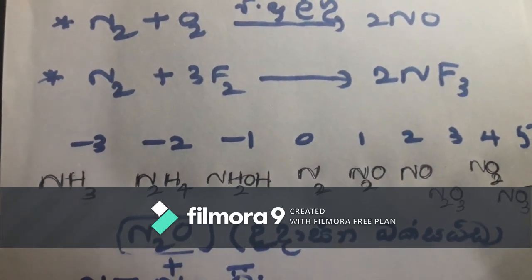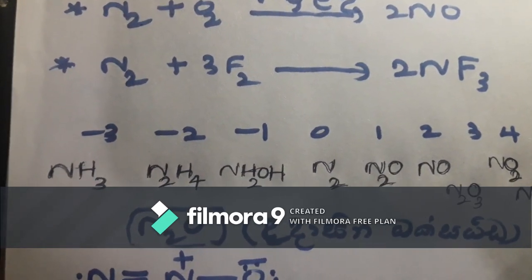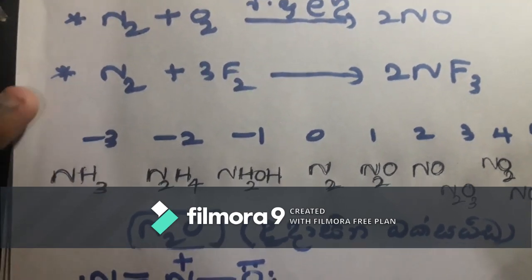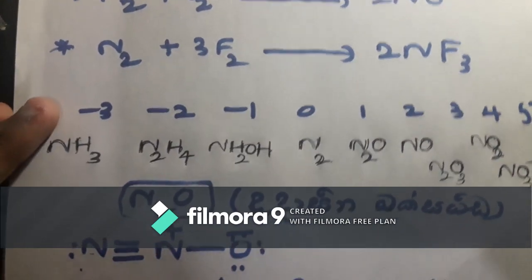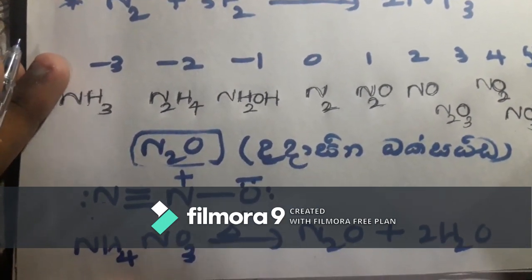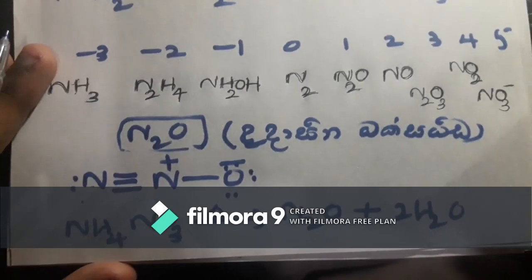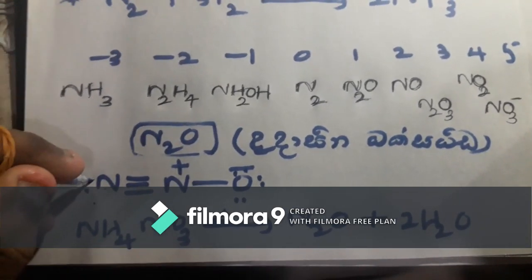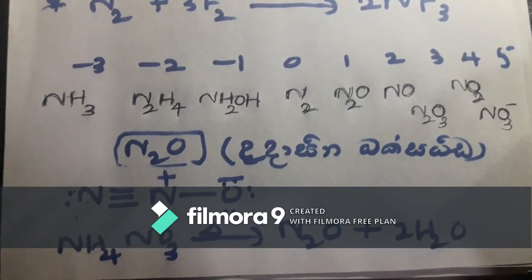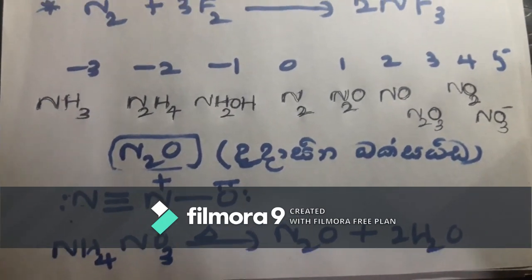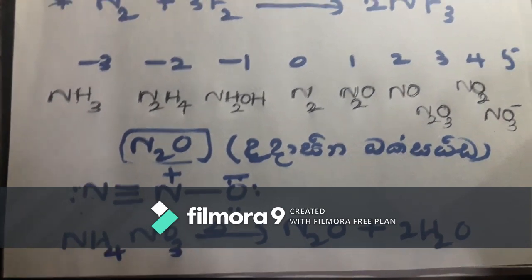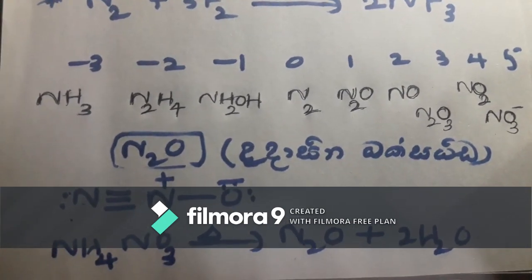Nitrous oxide, nitric oxide, nitrogen dioxide. It's called oxide. This is called nitrogen. Now this is called N2O.